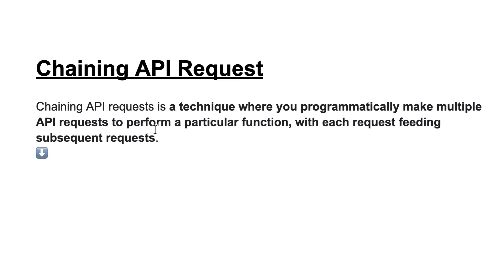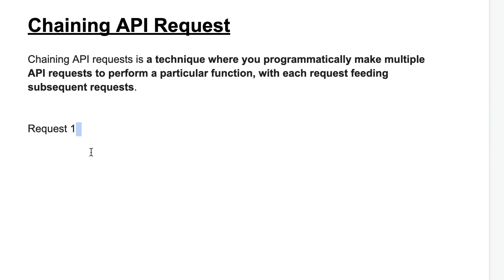So let's see the definition. Chaining API requests is a technique where you programmatically make multiple API requests to perform a particular function, with each request feeding subsequent requests. It means you have request one, and request one's response you can use in request two, and request two's response you are going to use in request three, and so on.